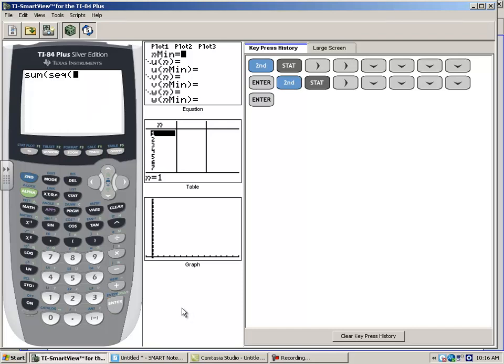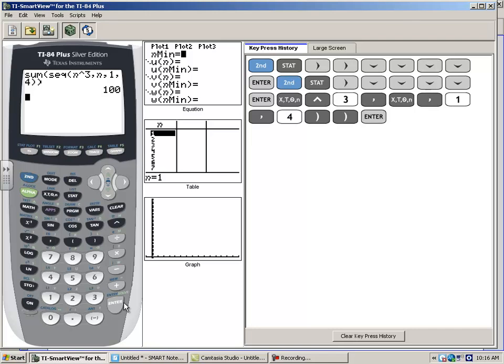And then we're going to hit second stat again. We're going to go over to operations, and we're going to go down to sequence. So I'm going to sum a sequence. Then I'm going to tell my calculator what the sequence was. Here it was k cubed. But when you press your x t theta n, you're going to get an n here. n cubed, and then comma n with respect to n, and then comma the lower bound, comma upper bound. And it tells you that the sum of those first four cubes is 100.